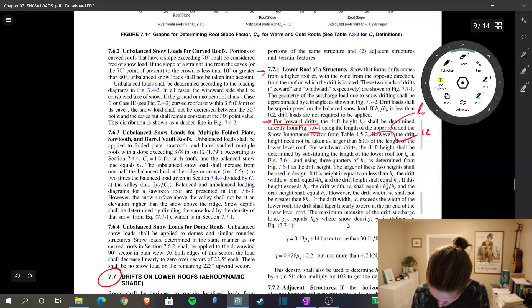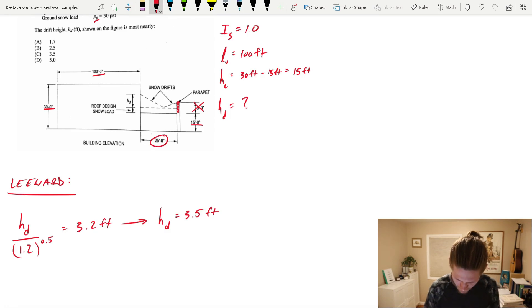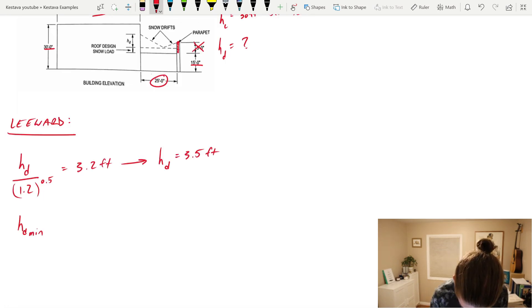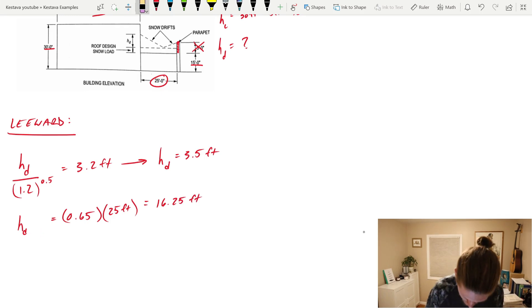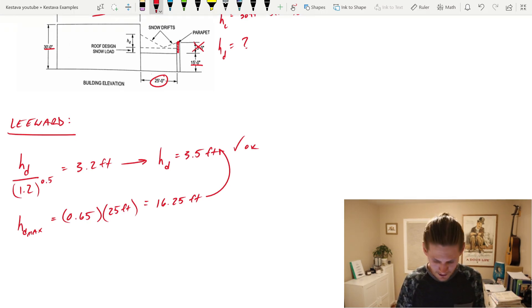But there was that extra thing associated per the 7.16. So let's check that out. The drift height need not be taken as larger than 60% of the length of the lower level roof. So the drift height, which is h sub d, doesn't need to be taken as larger than 60% of the length of the lower level roof. The lower level roof length is 25 feet. I'd say hd max is equal to 0.65, because that's 65% of the length of the low roof, which is 25 feet. That equals 16.25 feet, which is clearly much greater than what we solve for above. So we know that this h sub d is still okay.